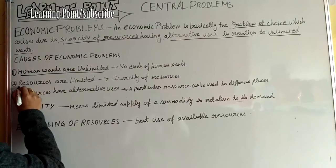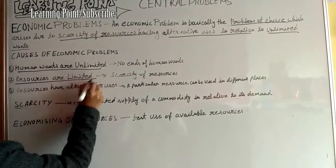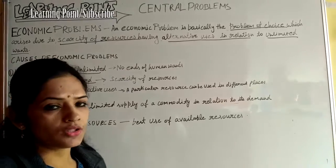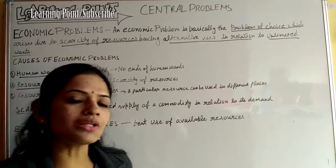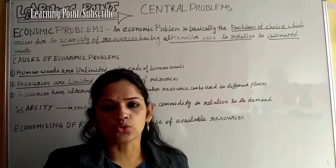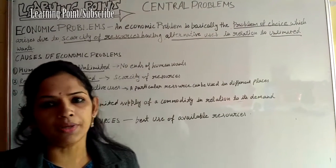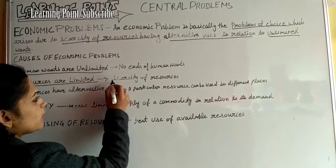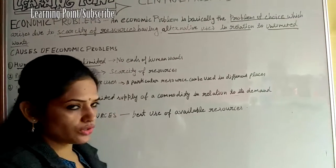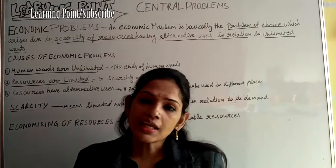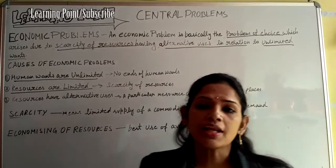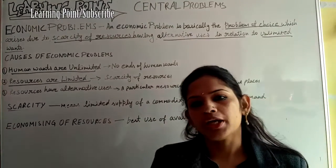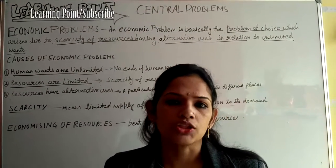The second cause is that resources are limited — there is a scarcity of resources. So our wants are unlimited, but in comparison, the resources are limited. And this problem is not just for a poor family; it is seen in the richer section as well.